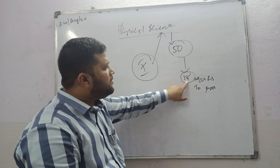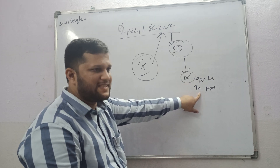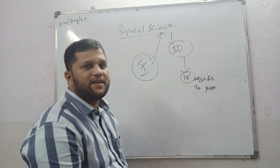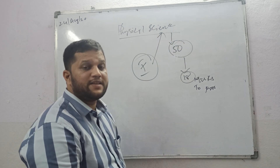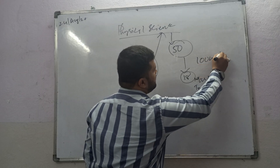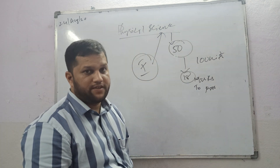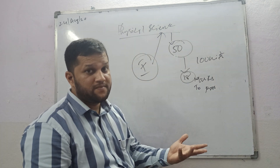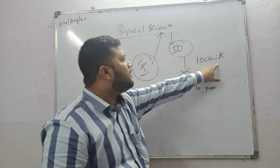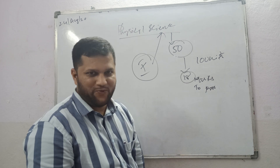We have to get 80 marks to pass. In physics, how many units are there? 10 units. In tenth class, there are 10 units, 10 chapters in physics.